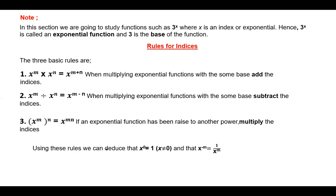Using these rules we can deduce that x to the power zero is equal to one, where x is not equal to zero. Also, when you have x raised to the power negative one, this is the same as writing one over x. More generally, x to the power negative m equals one over x to the power m.